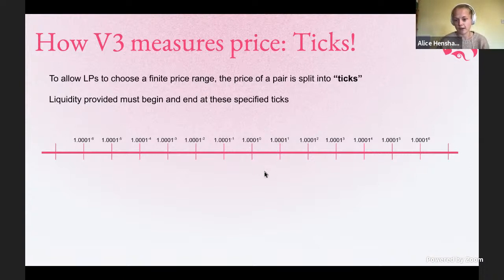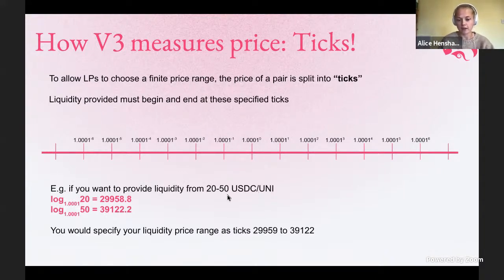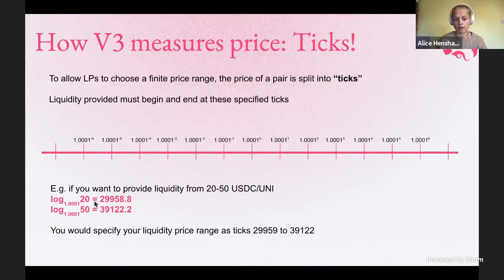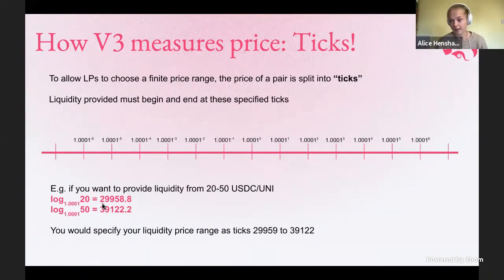Splitting the price up into these ticks, instead of having an infinite number of different prices, allows us to enable liquidity providers to choose the upper and lower bound on where they want to provide liquidity. So if you want to provide liquidity from a price of 20 to 50 USDC per UNI, you can do these quick logarithmic calculations. These are the two ticks your liquidity would be provided between — equal to 1.0001 to the power of 29,900. That gives you the price of 20.